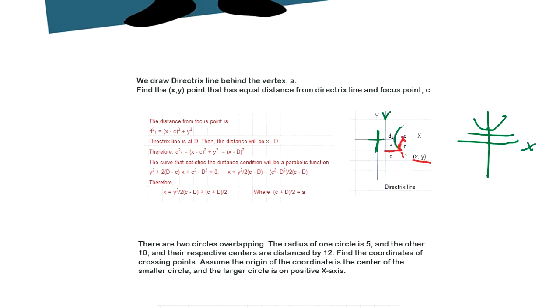So how do we find out? Well, the distance from the focus point - the focus point is (c, 0) in this case - so (x - c)² + y² is going to be the distance, right? And the directrix line is a straight line. The distance is always x - d, so (x - d)².